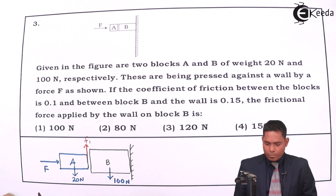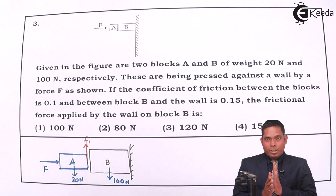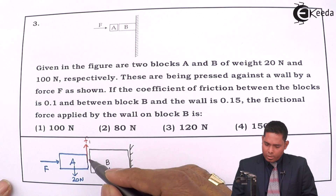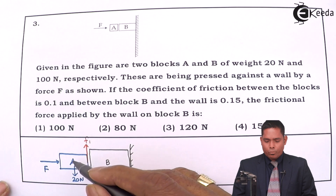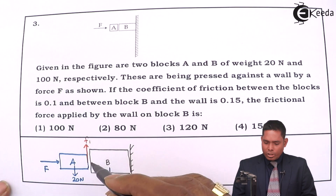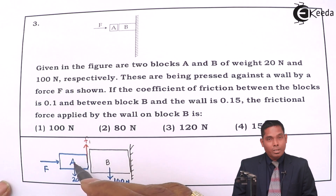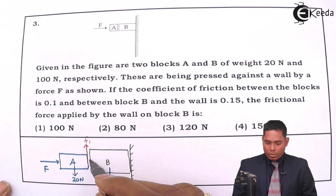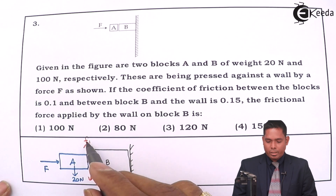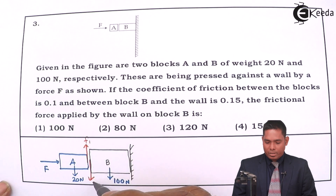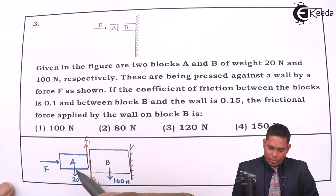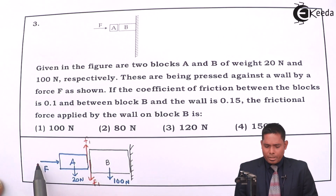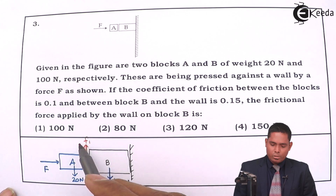Suppose the friction between the two blocks is F1. For block A, this F1 must equal 20 Newton. The frictional forces are an action-reaction pair. Block B applies friction on A in the upward direction to prevent A from sliding down. In turn, A applies an equal force F1 on B in the downward direction. From the free body diagram of block A at equilibrium, F1 equals 20 Newton.